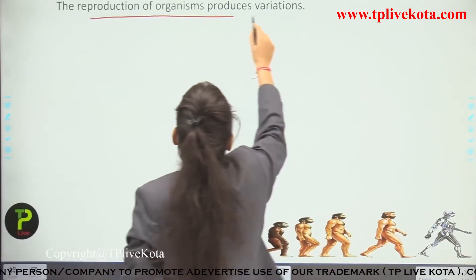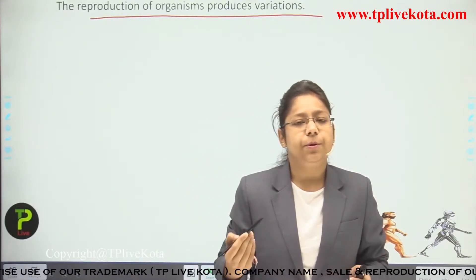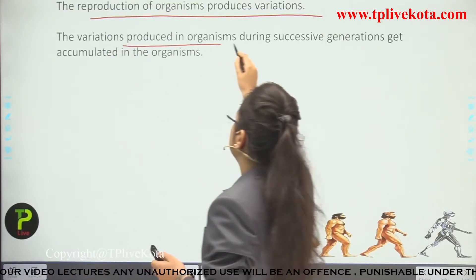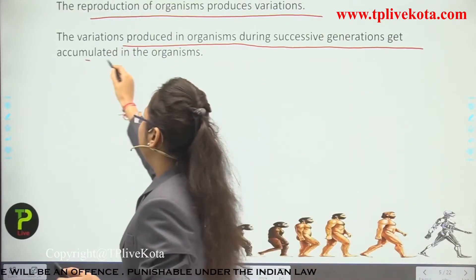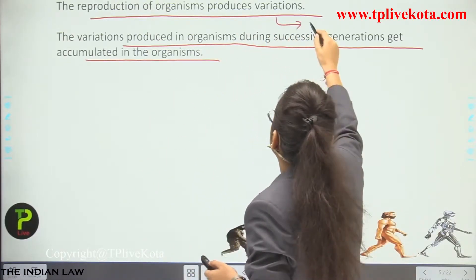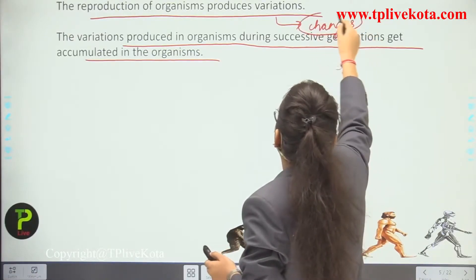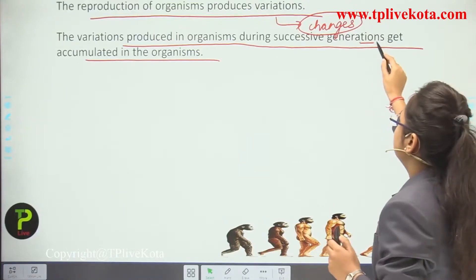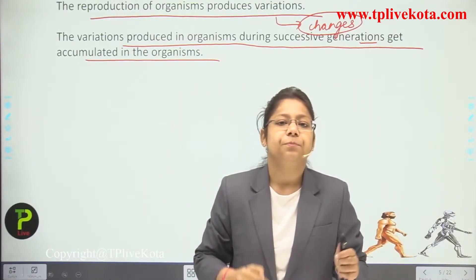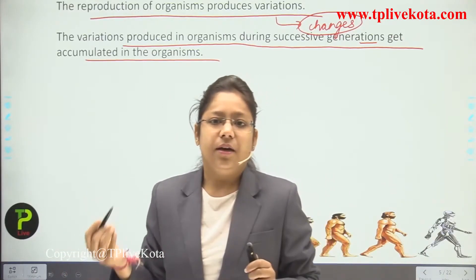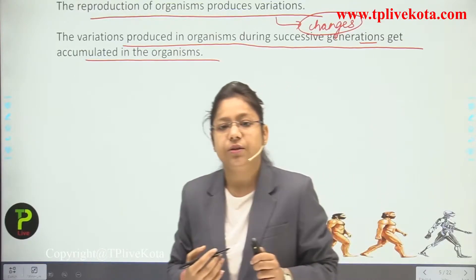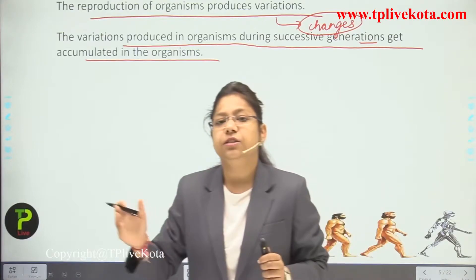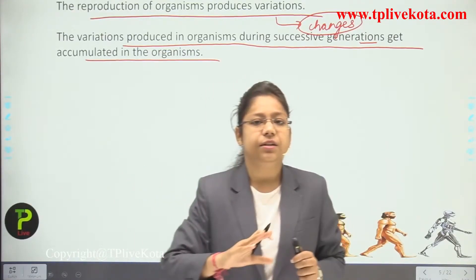The reproduction of organisms produces variations, and variations produced during successive generations get accumulated in the organism. For example, if a person has blue eyes, the blue eye gene gets transferred to their offspring; the offspring also gets blue eyes, and when they become a parent, they transfer that gene to the next generation — and so on the genes are carried from one generation to the next.